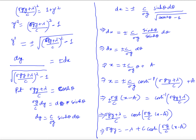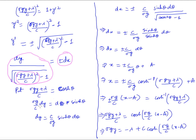After squaring, we get y'² = [(sigma·g·y + λ)/c]² − 1. Taking the square root gives dy/[...] = ±dx, which is a variable separable differential equation. To solve it, we substitute (sigma·g·y + λ)/c = cosh(θ).